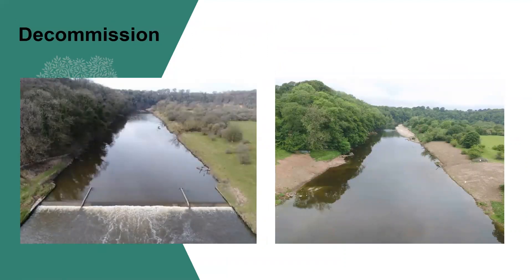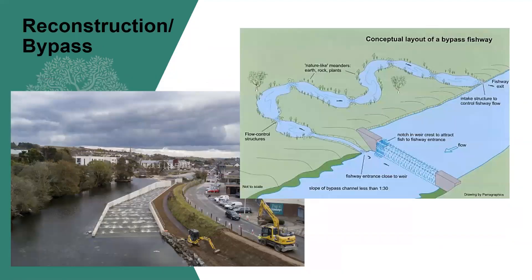The first possible outcome is decommissioning, which is the obvious and all-around best solution — a complete removal of the structure. Next we have reconstruction or a bypass. Reconstruction is where the structure can be rebuilt with mitigating measures incorporated. On the bottom left, you can see a rock ramp incorporated into a weir. A bypass is where a diversion channel is created around the barrier.